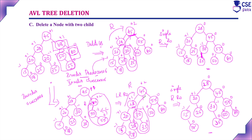All three cases have been discussed. Deleting a leaf node: after deletion, check the balance factor and apply the appropriate rotation if unbalanced. Deleting with one child: the child directly occupies that position, then check the balance factor and convert to balanced if needed — that is AVL.